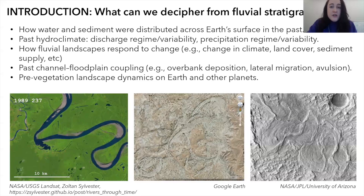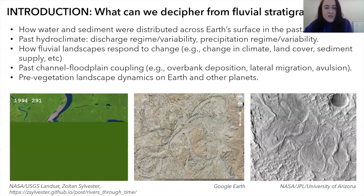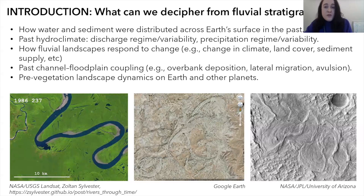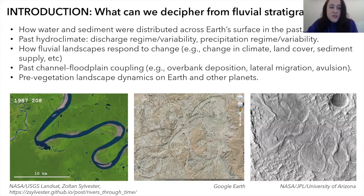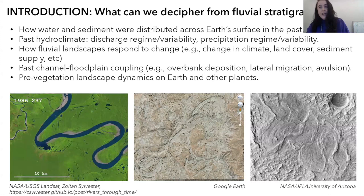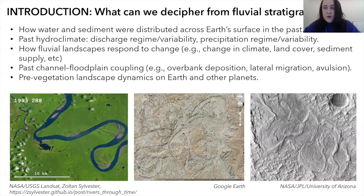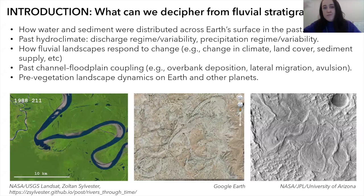Why are we interested in deciphering fluvial stratigraphy? From fluvial strata we can learn about how water and sediment were distributed across Earth's surface in the past, about past hydroclimate — discharge regime, precipitation regime — and how fluvial landscapes responded to changes in climate, land cover, and sediment supply. We can also learn about past channel-floodplain coupling and pre-vegetation landscape dynamics, which is applicable to other planets. The overarching goal is to understand how fluvial landscapes evolve on millennial and longer timescales in response to tectonic and climatic forcing.